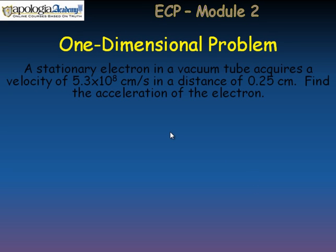Notice here that it gives you a distance in centimeters, but the velocity is also in centimeters per second. So you can keep the centimeters if you like. Since the question didn't tell us what units to report acceleration in, we are free to report them in whatever unit we would like. So I would suggest that you keep the centimeters.